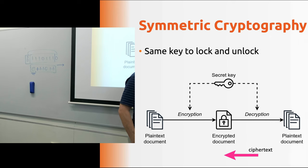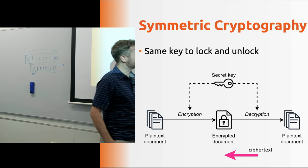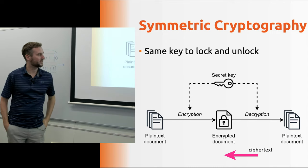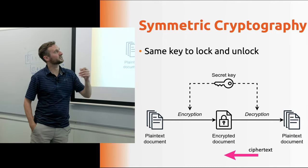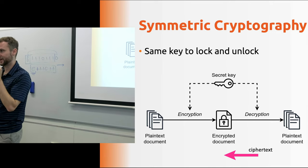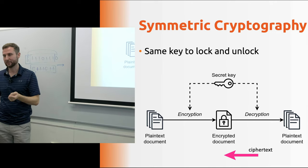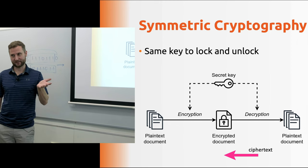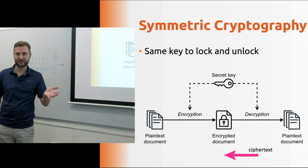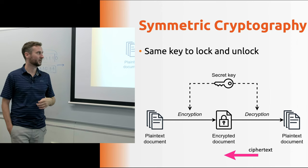Further on down, the intended recipient there, or perhaps you in the future, uses the same key to then recover the plain text document. So that's symmetric cryptography. The analogy is like one key in a lockbox. Put it in while it's locked. You don't know what's there. You use the same key, right? If you lose your key, that's it. You can't recover what's there.